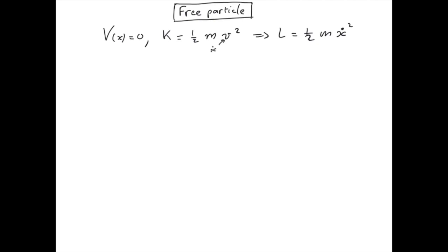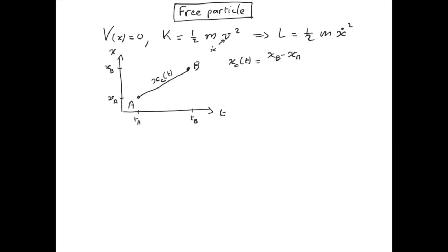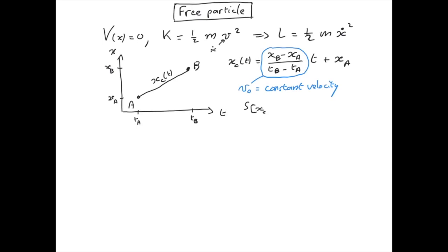Let's consider two events A and B. We know that the classical path for a free particle — when there is no potential between these two events — will be a constant velocity motion, so there will be no acceleration because there is no force and no potential. Whether we solve it with Newton or with the Euler-Lagrange equation, the action for the classical path is just the time integral between t_a and t_b of half m v₀ squared, where v₀ is a constant.